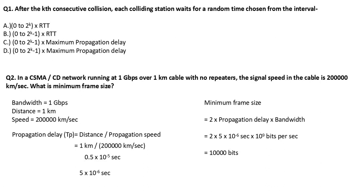The options are: A is 0 to 2^k × RTT; B is 0 to 2^(k-1) × RTT; C is 0 to 2^(k-1) × maximum propagation delay; D is 0 to 2^(k-1) × maximum propagation delay. The correct answer is option B: 0 to 2^(k-1) × RTT, because as we saw in theory, it uses RTT, not propagation delay alone.